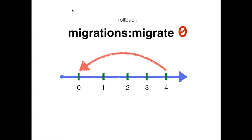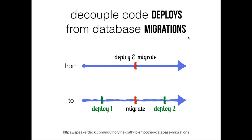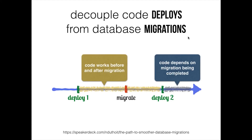One very critical thing about Doctrine: if you execute migrations:migrate zero, it will roll back everything — so be very careful. Another tip: decouple your code deploys from your database migrations. Instead of pushing everything at once, deploy your code and then push the migration separately. For example, in Zend Framework 2, we push modules that are not yet enabled, run the migrations, and then enable the modules — giving us flexibility without breaking our codebase.